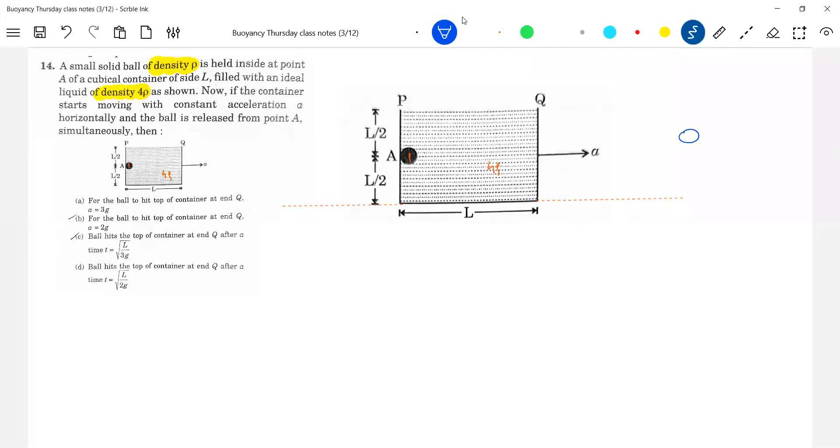So if you see this particular solid ball of density rho, its weight will act, so let's write rho Vg. Then buoyant force 4 rho Vg, the density is 4 rho. V is the volume, total it is immersed.